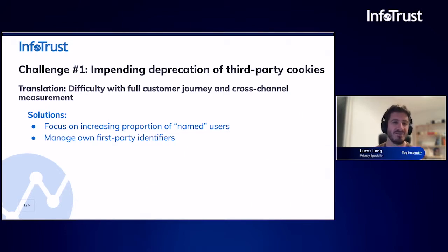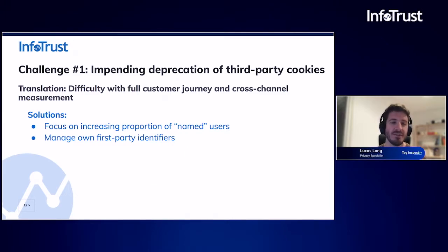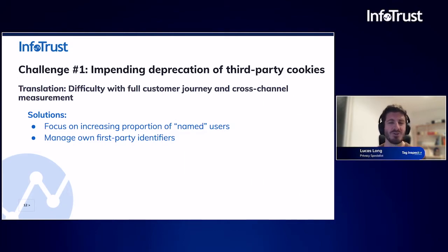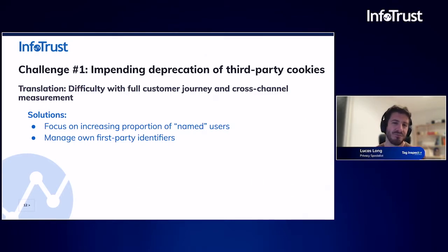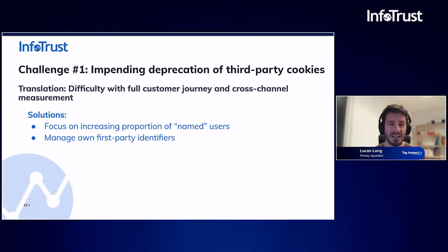This is the one that we hear a ton about — the impending deprecation of third-party cookies, specifically Chrome dropping support for third-party cookies in the next couple of years. The timeline is always a little bit hazy, but this translates to organizations struggling with measuring the full customer journey and being able to accomplish any kind of cross-channel measurement for various media and advertising campaigns. Traditionally, data integration across multiple domains would require some sort of a key value to marry together those data sets — to associate conversions on owned and operated websites back to clicks and impressions on publisher websites. That's really the impact of this 'cookiepocalypse,' as a lot of people like to term it.